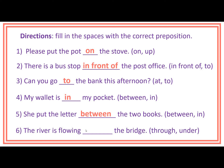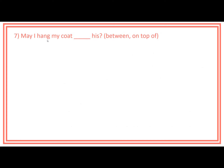Number 6: The river is flowing ___ the bridge. Through and under. Answer: The river is flowing under the bridge. Number 7: May I hang my coat ___ his? The prepositions inside the brackets are between and on top of. Answer: May I hang my coat on his?